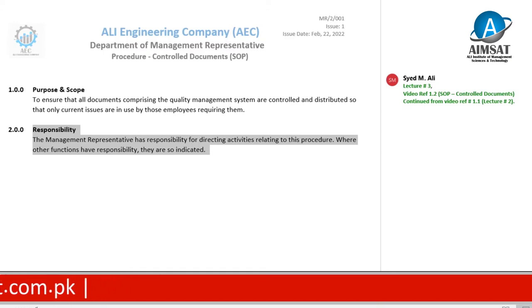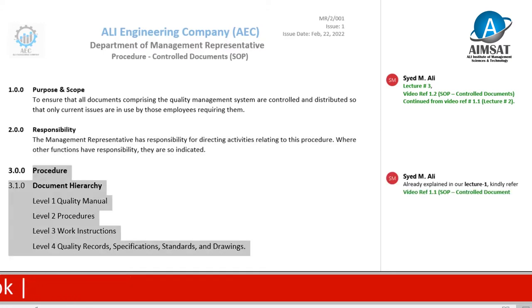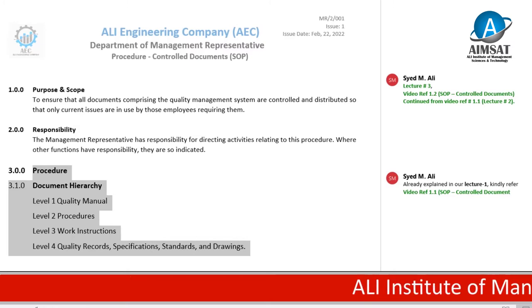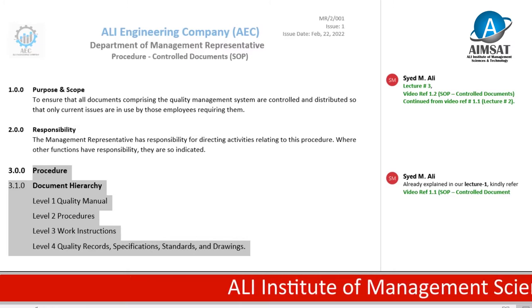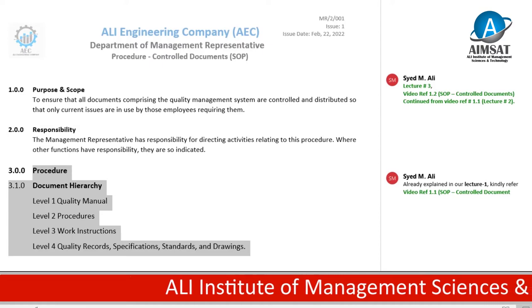Procedure — Document hierarchy: Level one is quality manual. Level two is procedure. Level three is work instruction. Level four is quality records. Also included are specification standards and drawings.